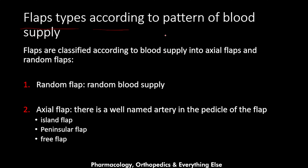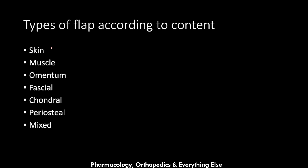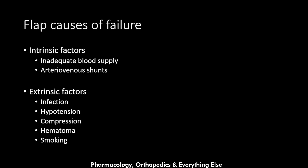Flaps are also classified according to blood supply pattern into axial flaps and random flaps. Random flaps have no well-named artery supplying them, whereas axial flaps have a well-named artery in the axis of the flap. Axial flaps are further classified into island flaps, peninsular flaps, and free flaps. Flaps are also classified by content into skin flaps, muscle, omentum, fascial, chondral, periosteal, and mixed flaps.